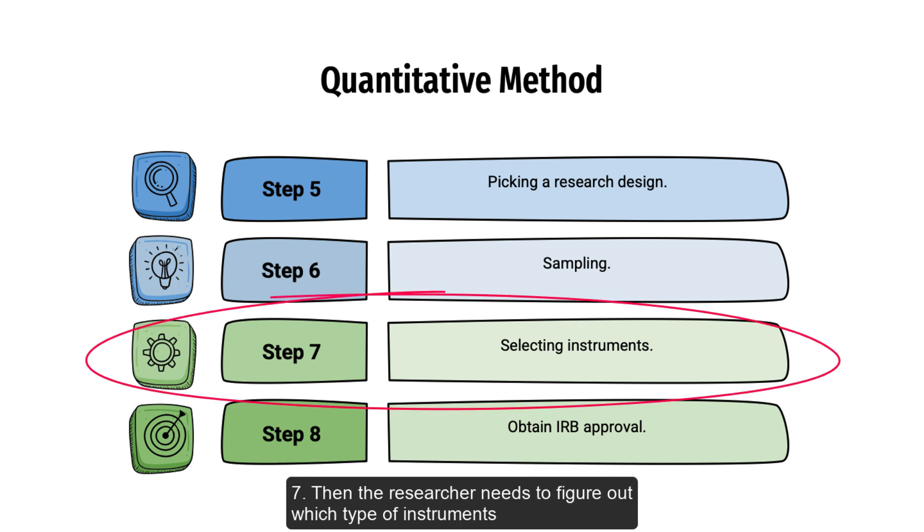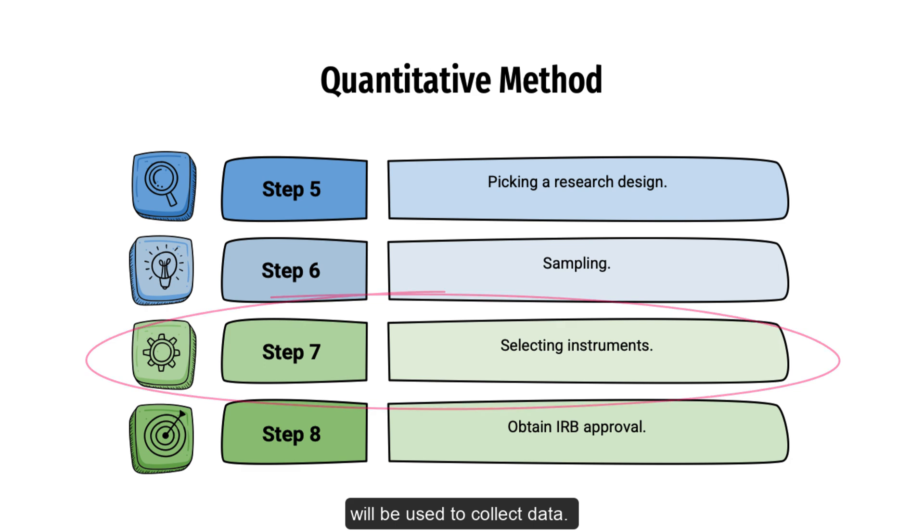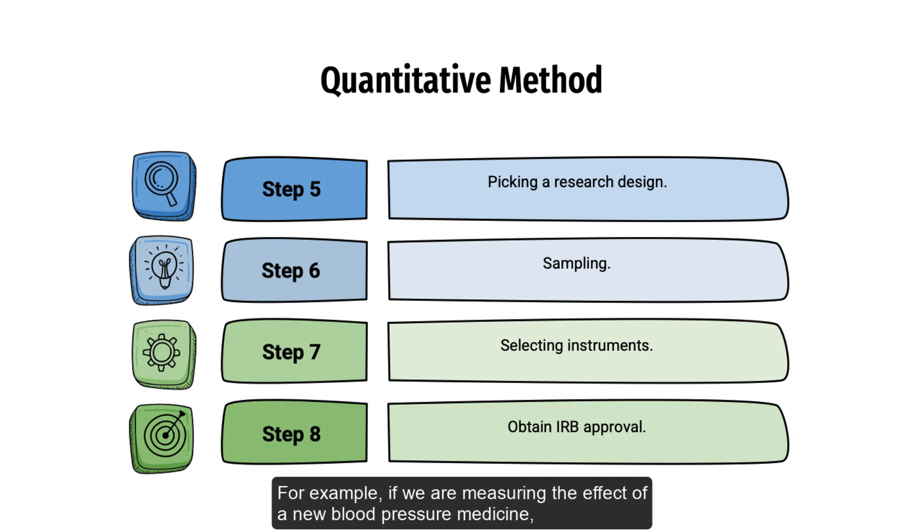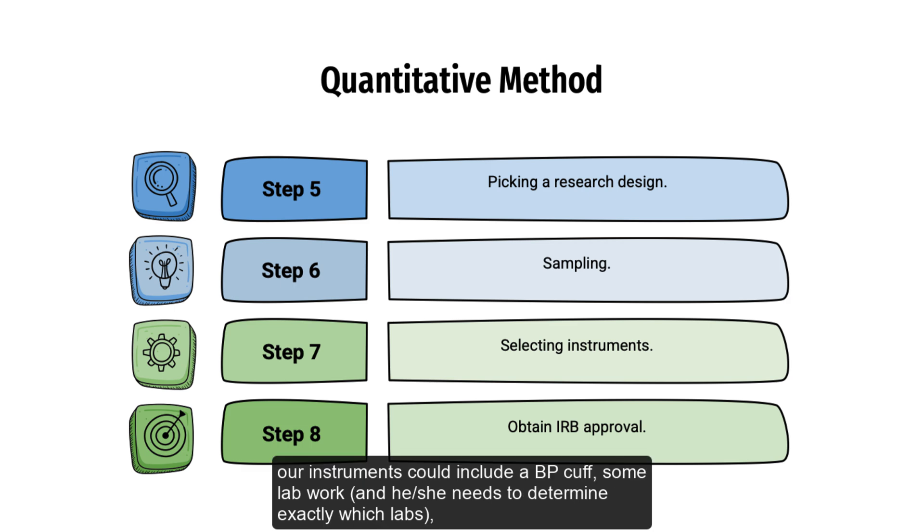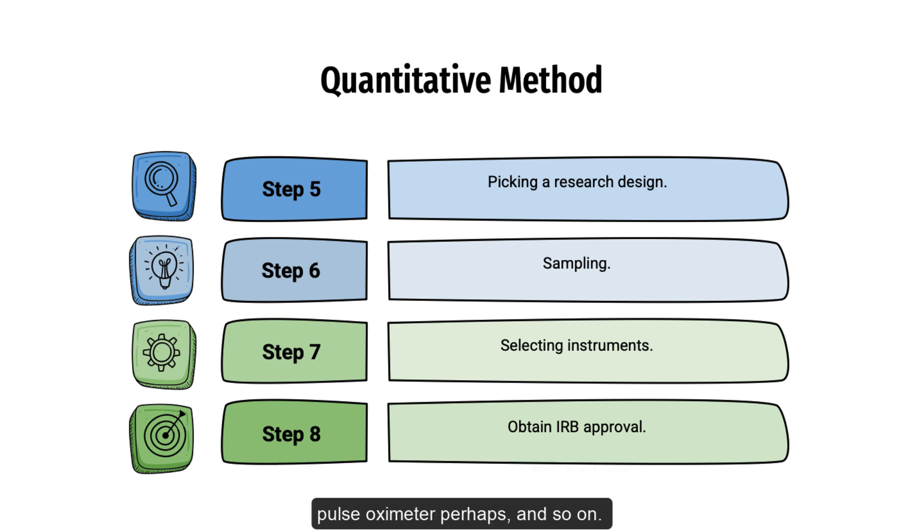Step 7: Then the researcher needs to figure out which type of instruments will be used to collect data. For example, if we are measuring the effect of a new blood pressure medicine, our instruments could include a blood pressure cuff, maybe some lab work. He or she needs to determine exactly which labs. Maybe a pulse oximeter, perhaps, and so on.